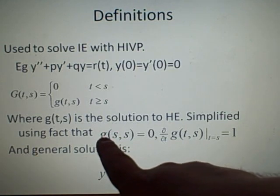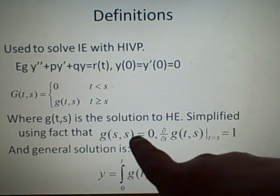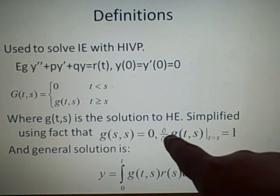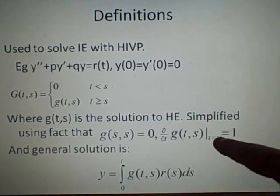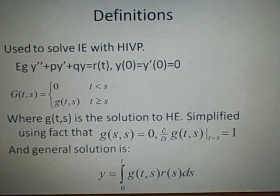by stating that g(s,s) equals 0, and the derivative with respect to t of g(t,s) evaluated at t equals s equals 1. And that's always the case.